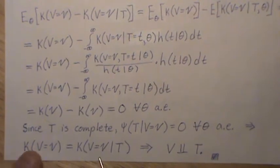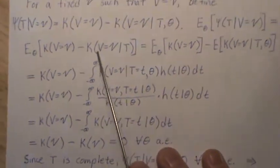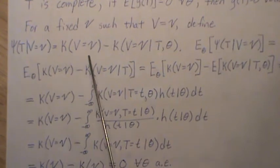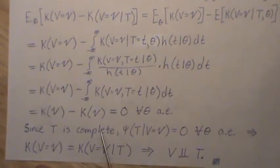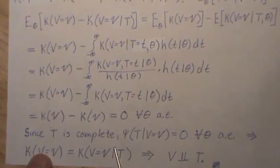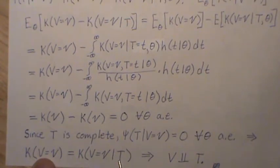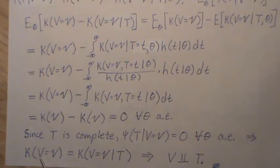So that says that these equal. So if this is psi and it equals zero, so set this to zero, take that to the other side, then these equal. But this is a conditional, v given t equals just the density of v, that says that v and t are independent, and that's what we wanted to show.